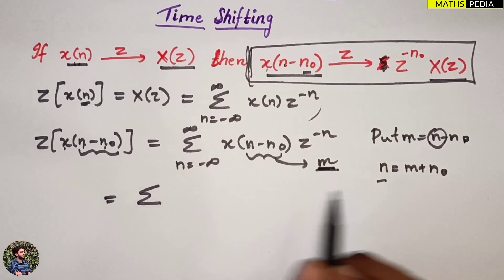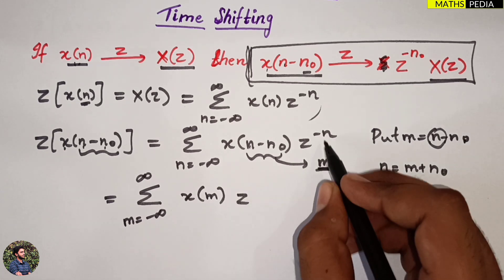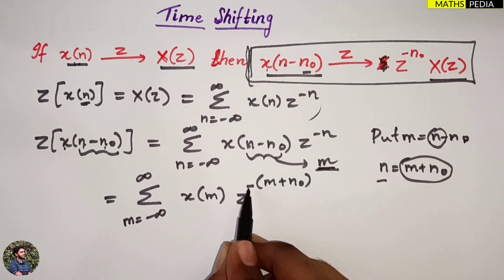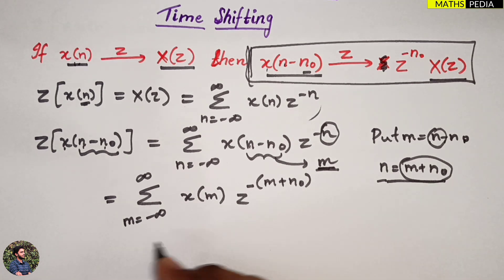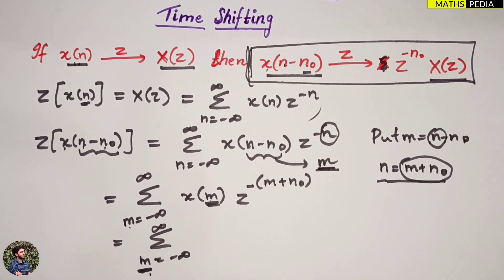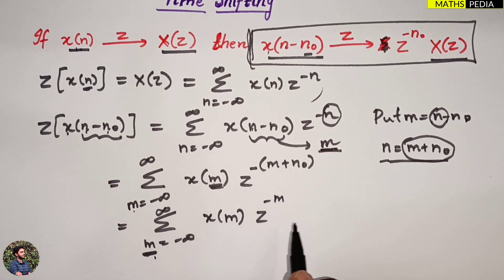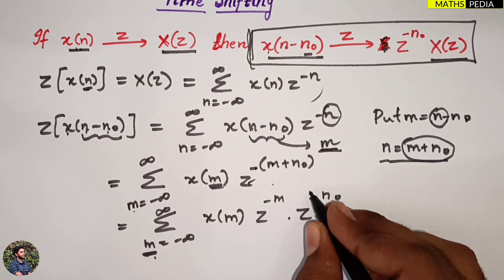So the summation becomes: m equal to minus infinity to infinity, x(m), z power minus n — and in place of n I have to put minus of (m plus n-naught). This bracket is important. So this becomes: summation m equal to minus infinity to infinity of x(m) into z power minus m into z power minus n-naught.